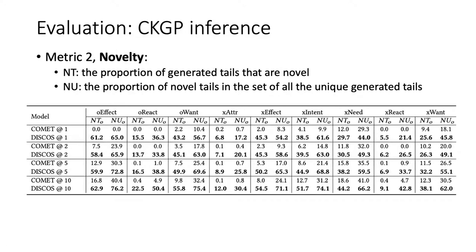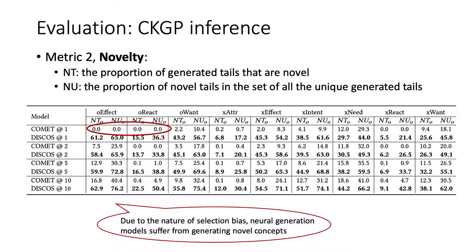Besides human-annotated quality, we also check the novelty of the generated tails. Specifically, we check the proportion of generated tails that are novel, and the proportion of novel tails among all unique generated tails. The second metric, NU, can be used to check the diversity of generated novel concepts. We can see that due to selection bias, neural generation models suffer from generating novel concepts — for some relationships, the top results are all existing concepts like OEffect and OReact. Discourse doesn't suffer from this problem and can generate much more diverse knowledge.